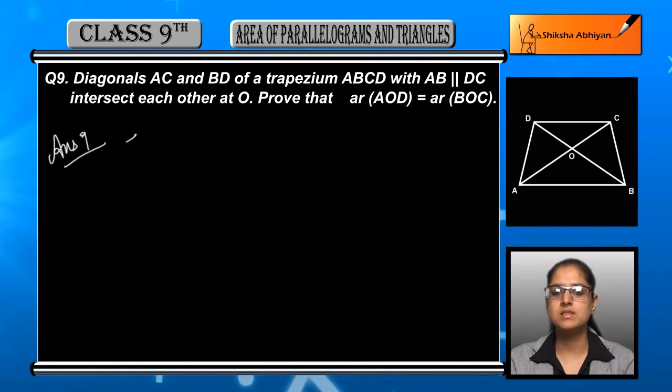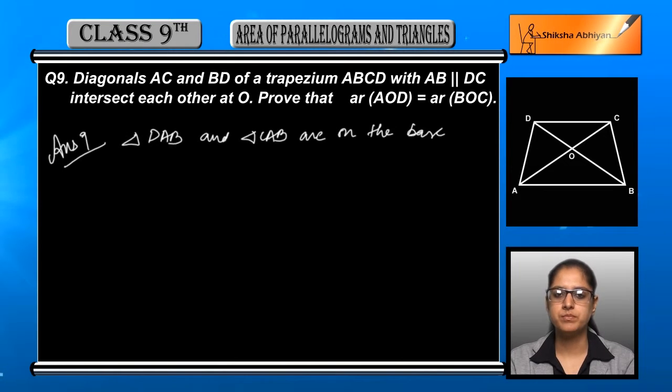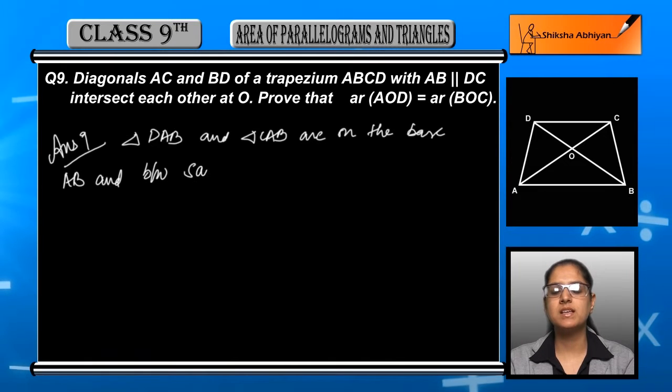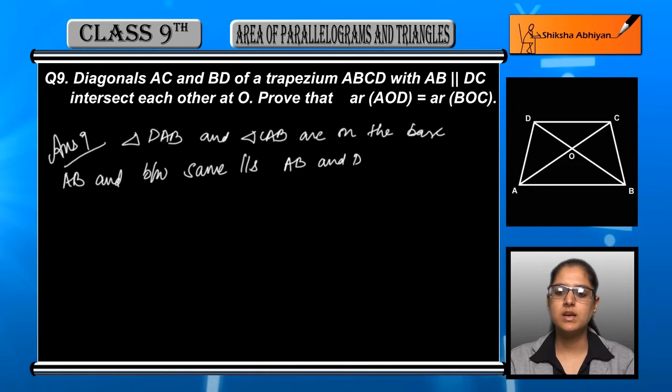That is DAB and CAB. In both these triangles, if you look at the figure, you have DAB and CAB, they are on the same base AB. Both have the same base AB and both lie between the same parallel lines, that is AB and DC, or we can say AB and CD.